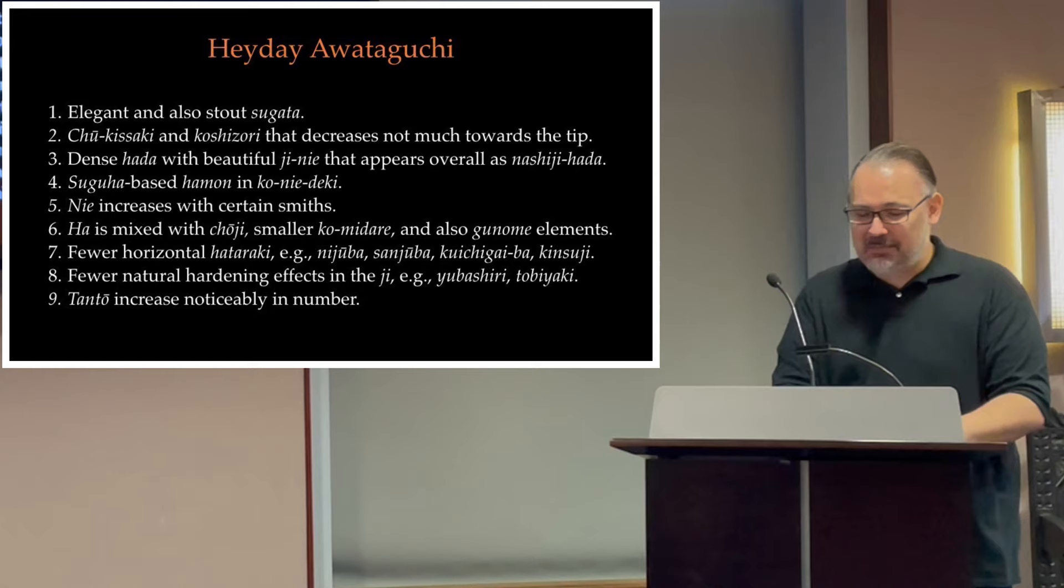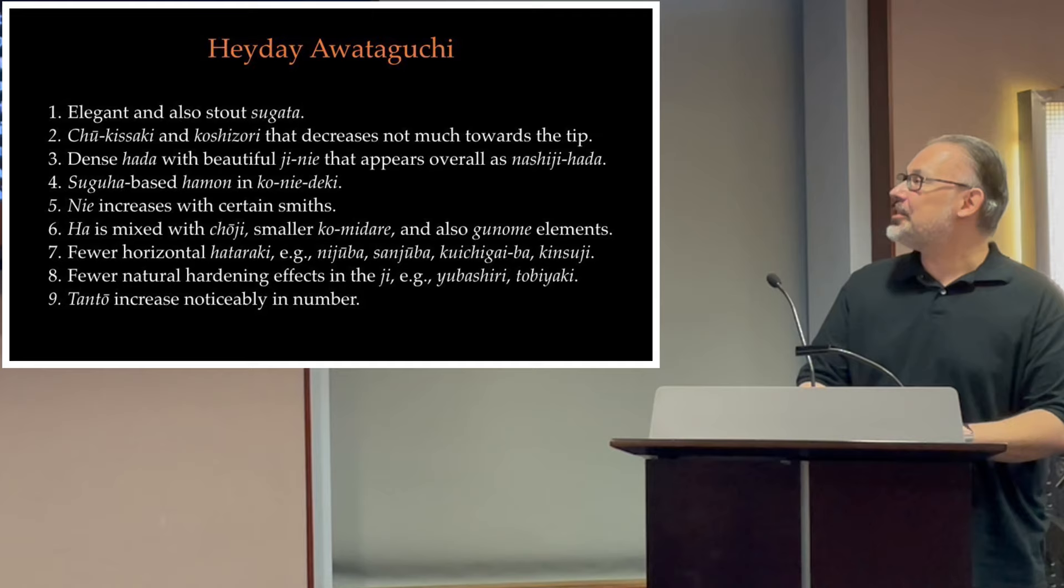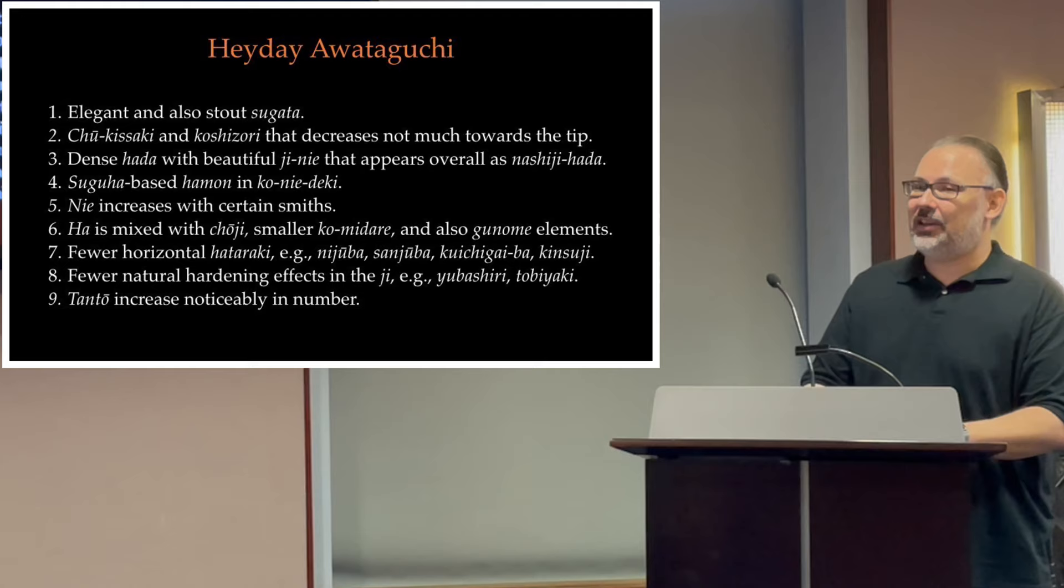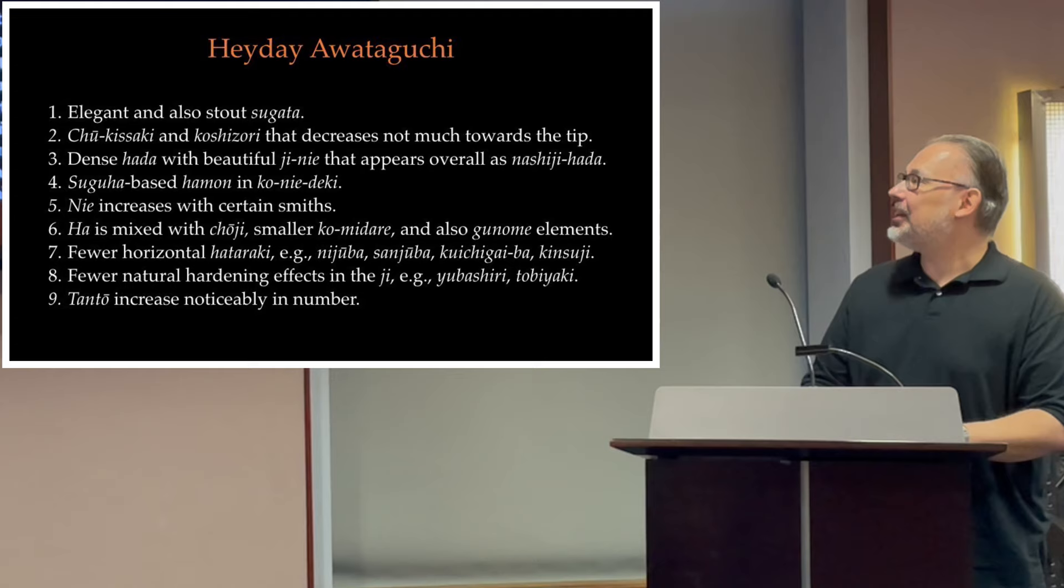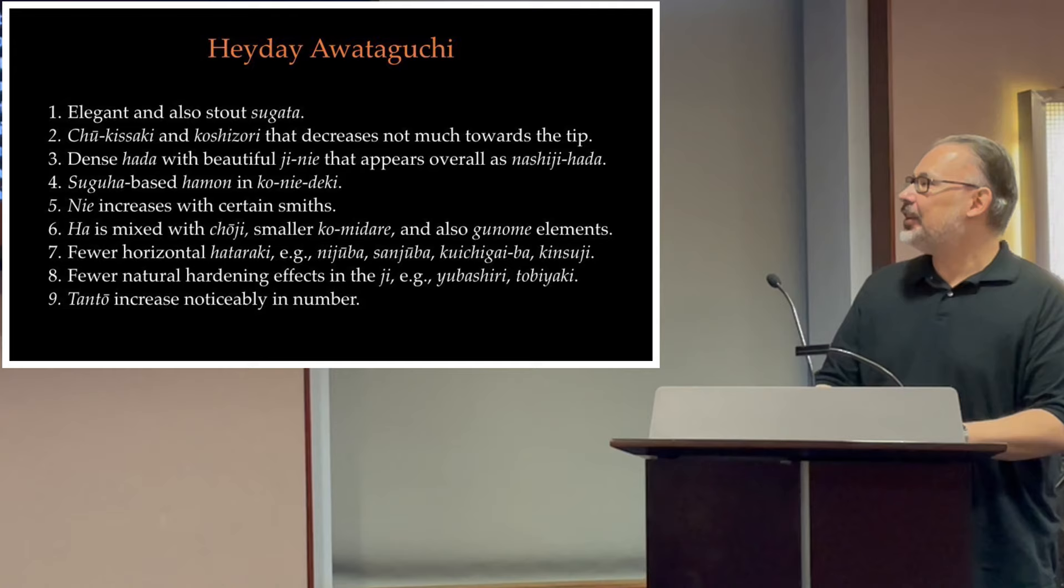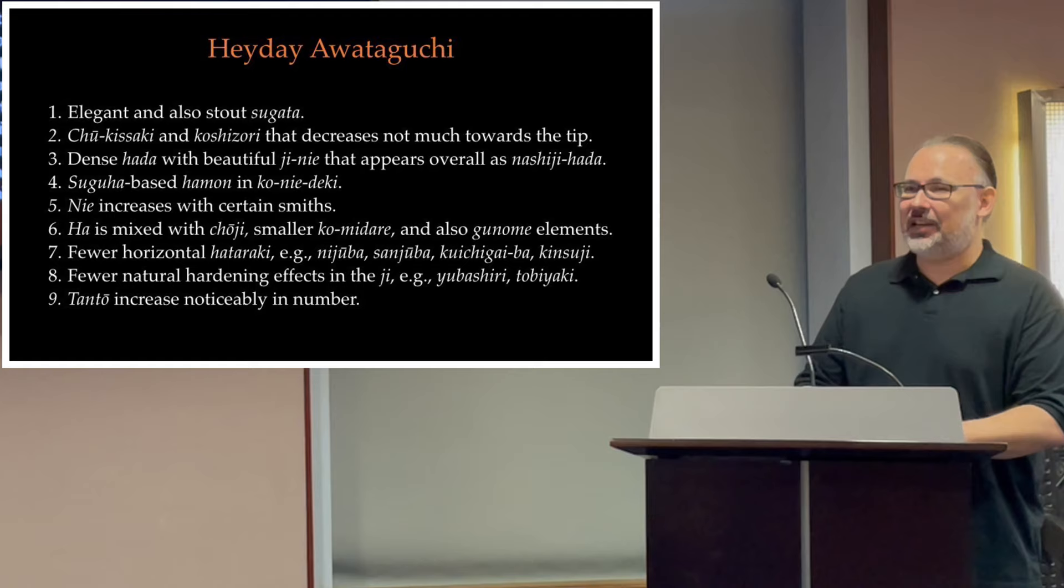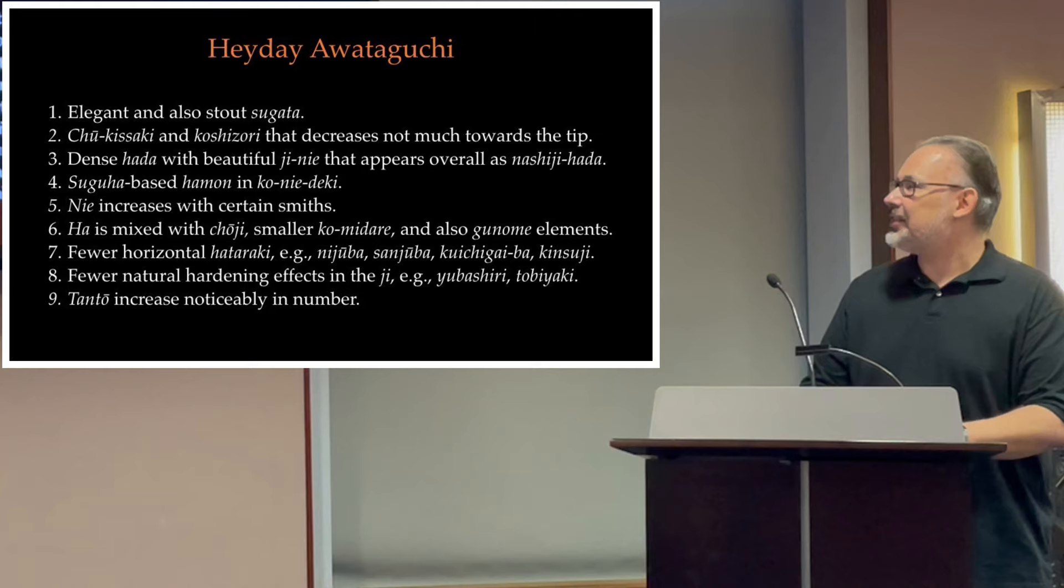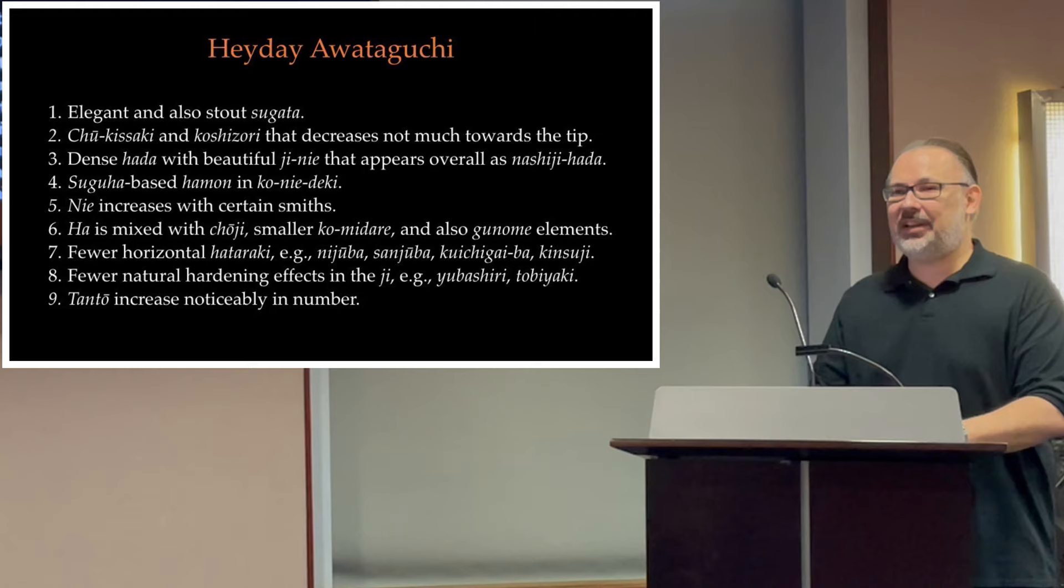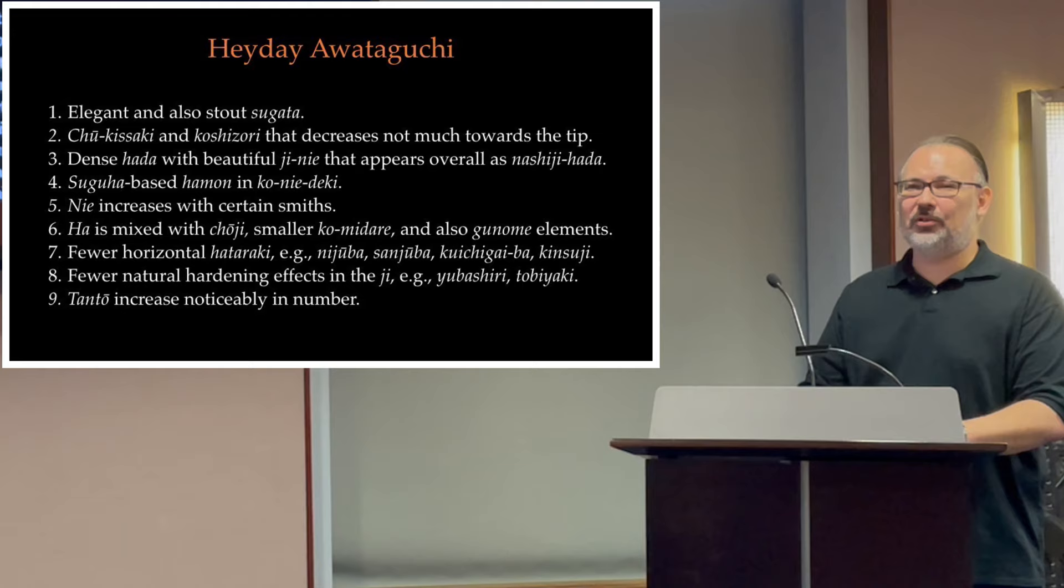I just want to sum up the heyday Awataguchi characteristics here. Elegant but also stout, you got the chu-kissaki and koshizori that decreases not so much towards the tip, so we're going to get a little bit towards toriizori. Then we have a dense hada, beautiful chikei that appears as a shiji. We have a suguha-based hamon in ko-nie-deki. The nie increase with certain smiths like Kunitsuna. The ha is mixed with choji and smaller ko-midare with, and also gunome with Kunitsuna, not the main line guys. With the exception of Kuniyoshi, we have fewer horizontal hataraki, and we also have fewer natural hardening like in the yubashiri and tobiaki as we see with the early Yamashiro smiths. So the Awataguchi smiths toned it down, except for Kuniyoshi. And the tanto increase in number, so if you have a Kamakura-period tanto that is early, you can go with Awataguchi because we don't see this with Gojo and Sanjo schools. If the tanto is later, it's probably slightly more likely a Rai.